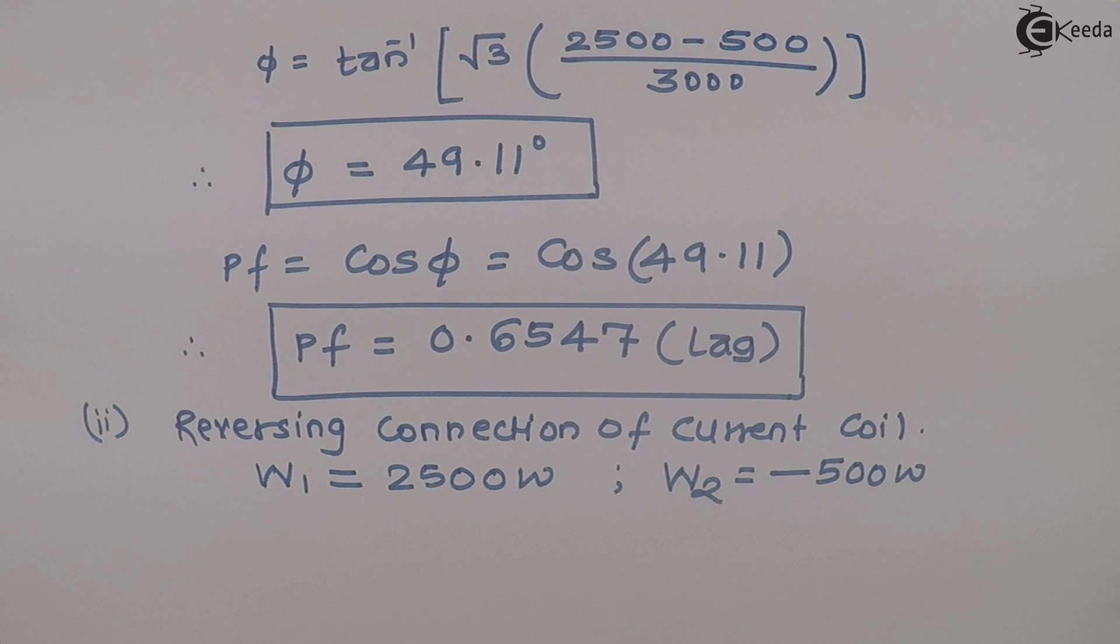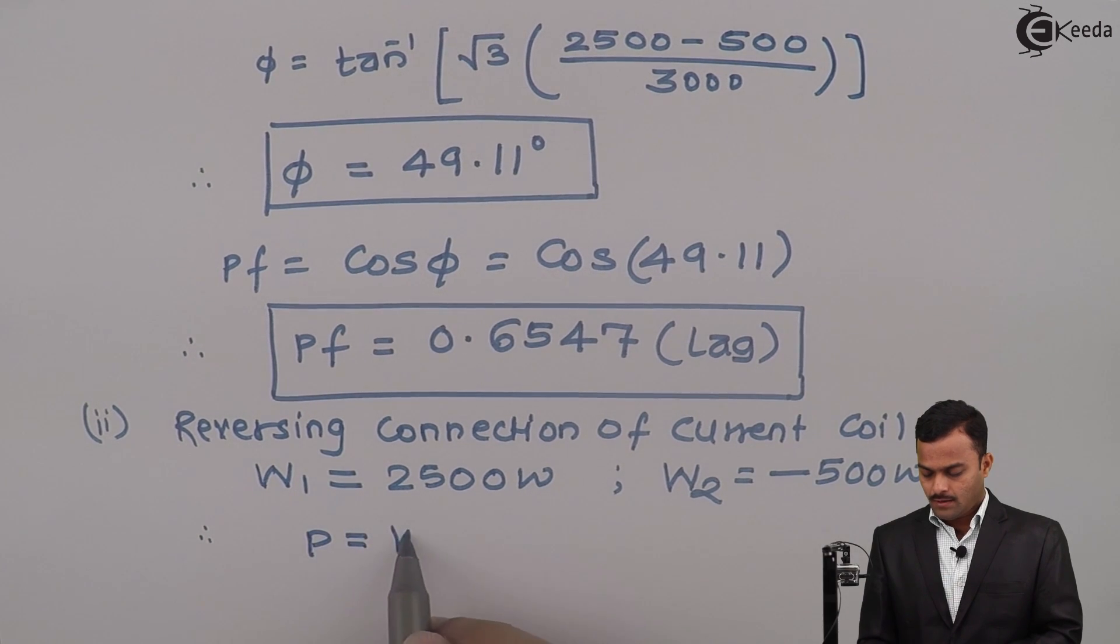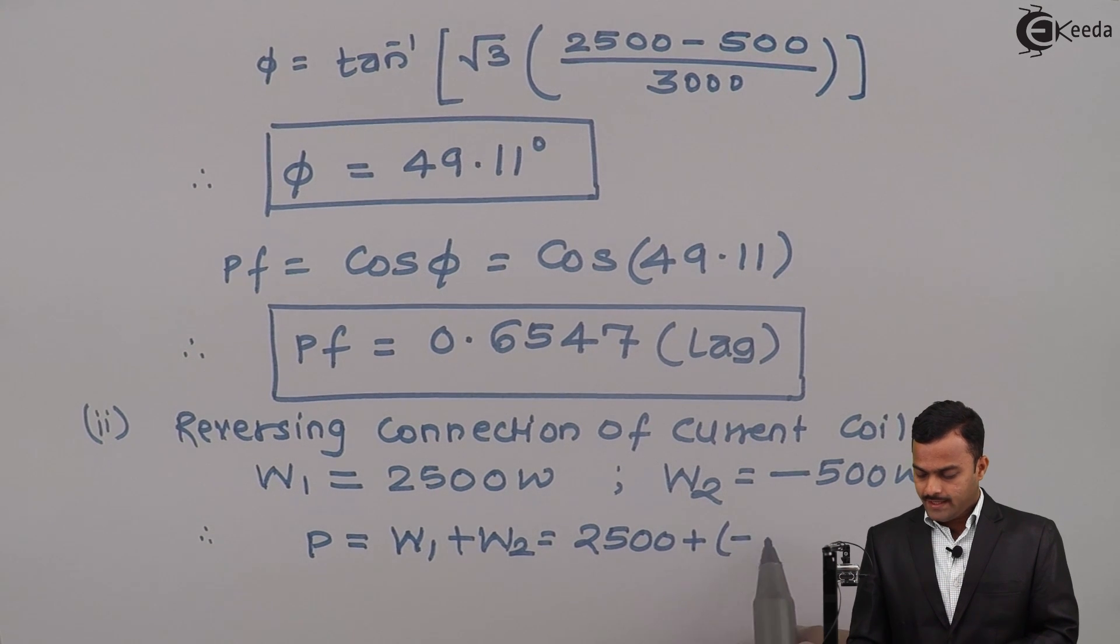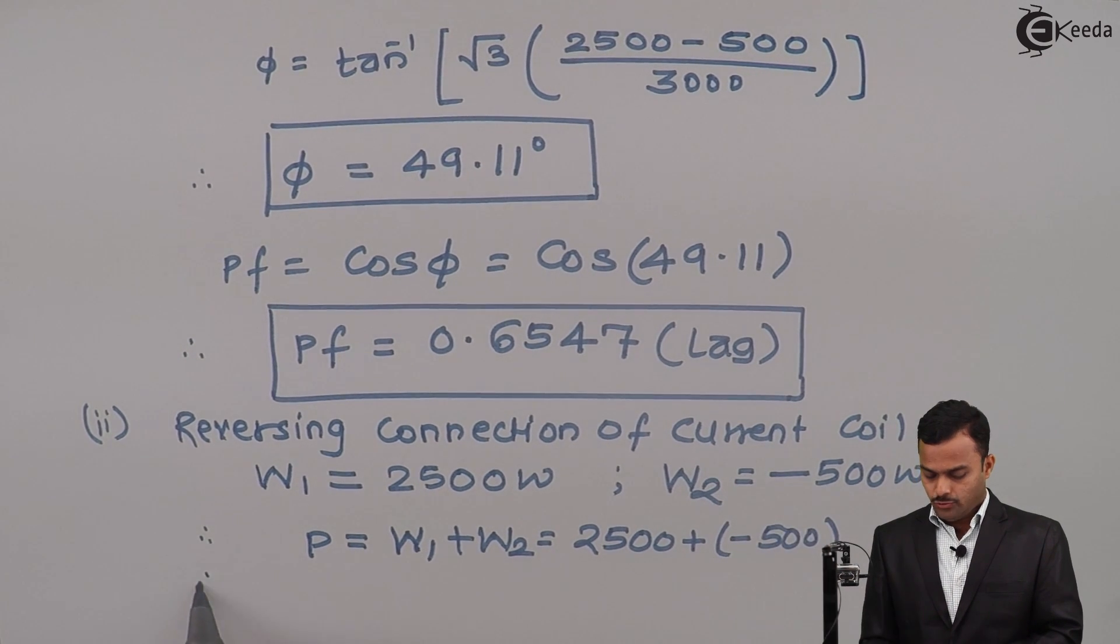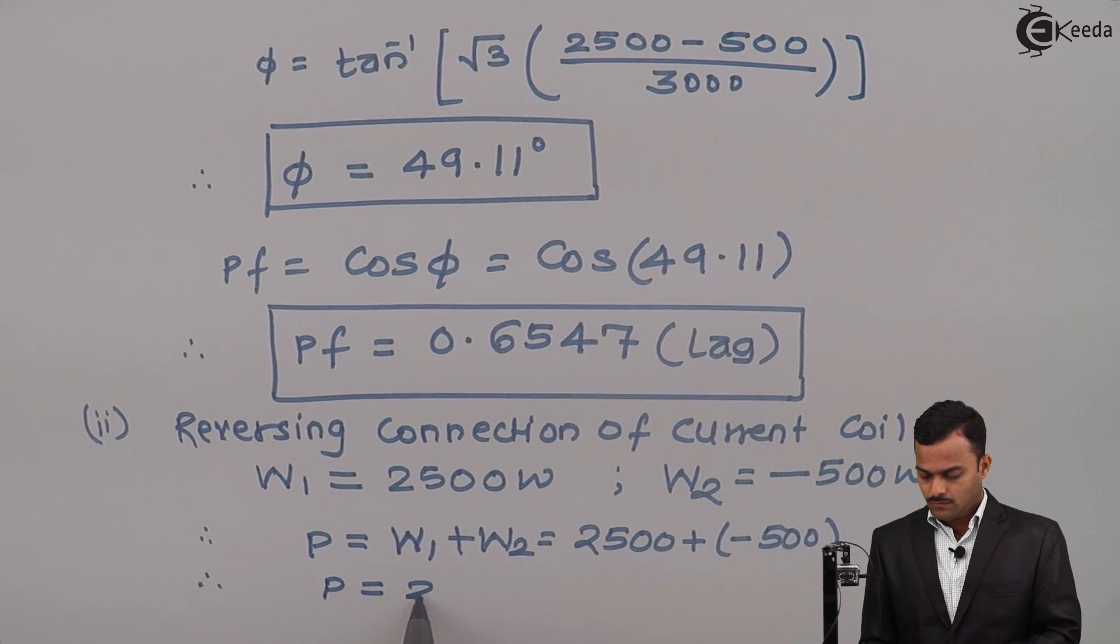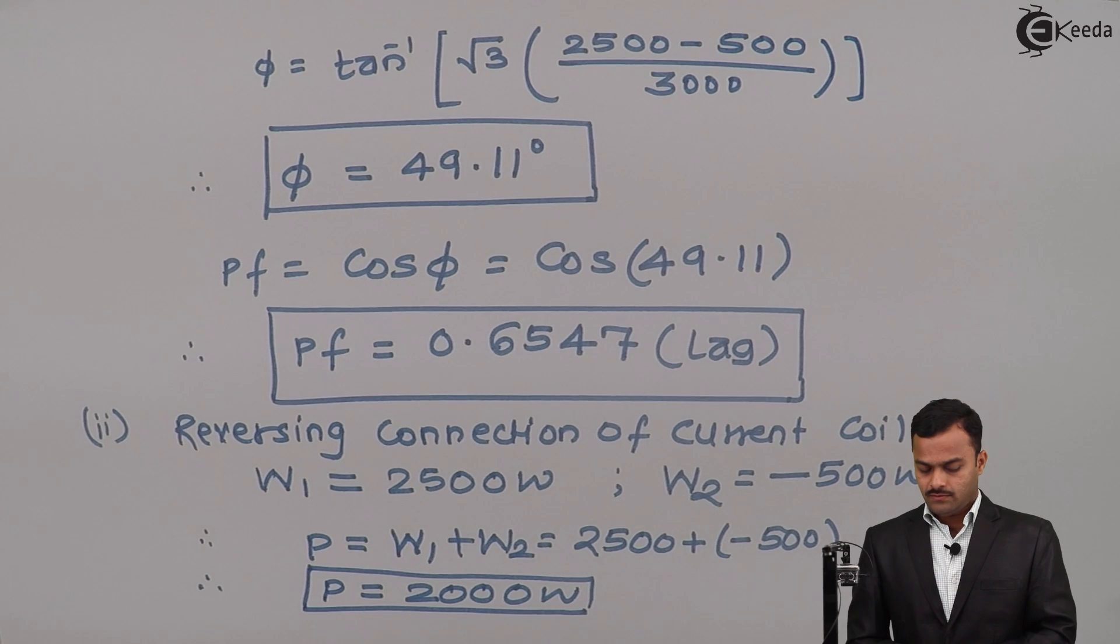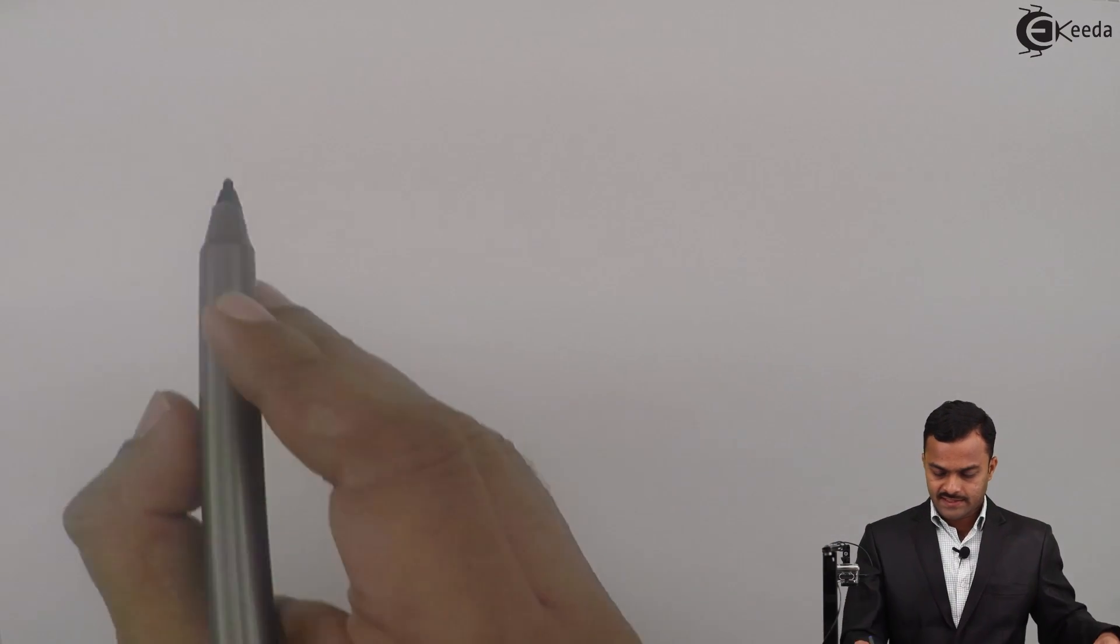Remaining procedure is absolutely similar to the previous case. So I can consider total power P will be W1 plus W2, which is equal to 2500 plus minus 500, so that will give me P equal to 2000 watts. So total power I am getting is 2000 watts.